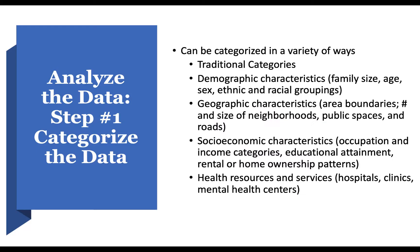On to chapter 12: analyze the data. Step one is to categorize the data. Data can be categorized by demographic characteristics — family size, age, sex, ethnic and racial groups. Under geographics, know the area boundaries, size of neighborhoods, public spaces, and roads. Under socioeconomic characteristics, look at occupation and income categories, education attainment, and home ownership. Home ownership is a social determinant of health — the poorer people are and the less able to own their homes, the more direct the proportional link to their health.